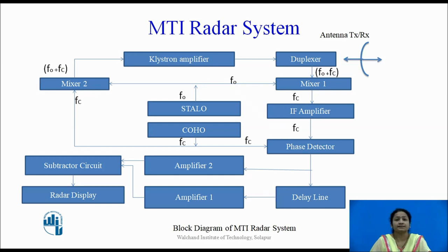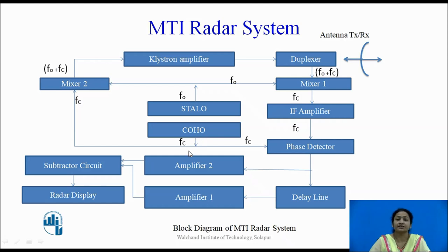This is the block diagram of the MTI Radar System, which consists of a transmitter and receiver with different components. There are two oscillators: the STALO and the COHO. STALO stands for Stable Local Oscillator and COHO stands for Coherent Oscillator. The STALO generates a frequency F0 and the Coherent Oscillator generates frequency FC. The system uses two mixers, Mixer 1 and Mixer 2, which have the same characteristics.